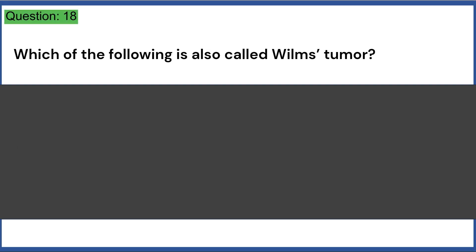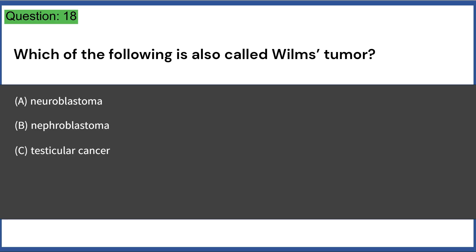Which of the following is also called Wilms' tumor? A. Neuroblastoma, B. Nephroblastoma, C. Testicular cancer, D. Fibrosarcoma, E. Ovarian cancer. Answer: B.